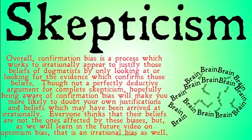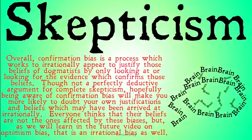Overall, confirmation bias is a process which works to irrationally appear to justify the beliefs of dogmatists by only looking for evidence which confirms those beliefs. Though not a perfectly deductive argument for complete skepticism, being aware of confirmation bias will hopefully make you more likely to doubt your own justifications and beliefs, which may have been arrived at irrationally. Everyone thinks their beliefs are not the ones affected by these biases — but as we'll learn in a future video on optimism bias, the idea that your beliefs are perfect and other people's are the ones with problems is itself an irrational bias called optimism bias.